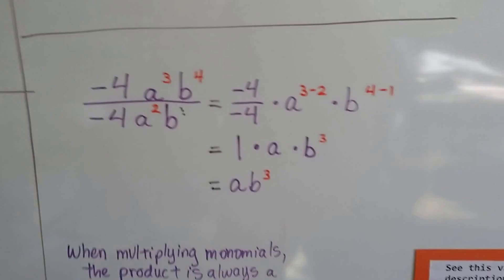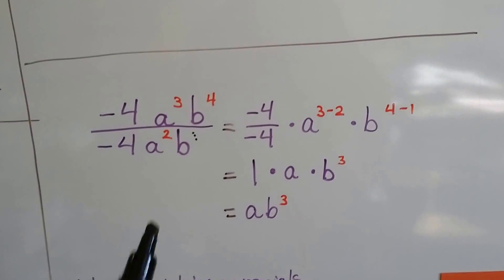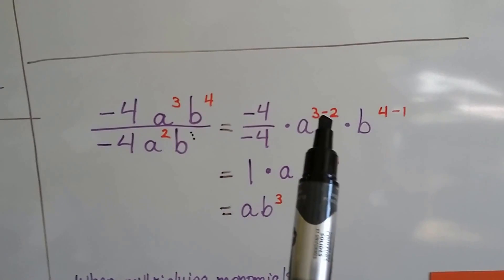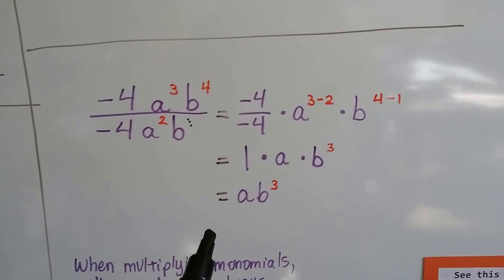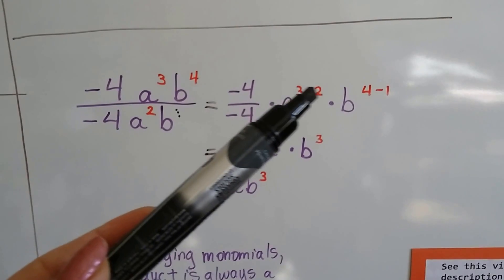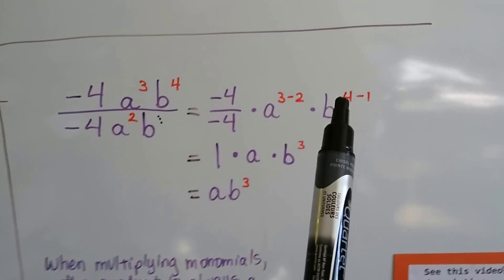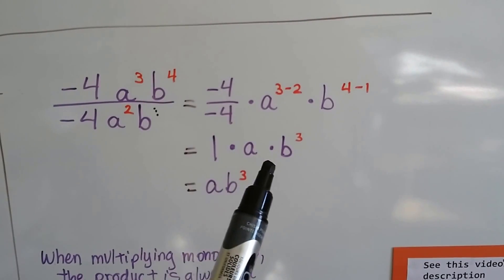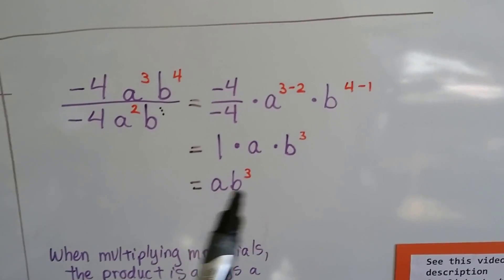Let's try a more difficult one. We've got negative 4 in both numerator and denominator. We separate from the variables with their exponents and get negative 4 over negative 4, then a to the (3 minus 2) and b to the (4 minus 1) — because there's an invisible exponent of 1 when no exponent is written. Same numerator and denominator equals 1, and 3 minus 2 is 1, so we just get a regular a. And b is 4 minus 1, so that's b to the third power — giving us ab to the third power.